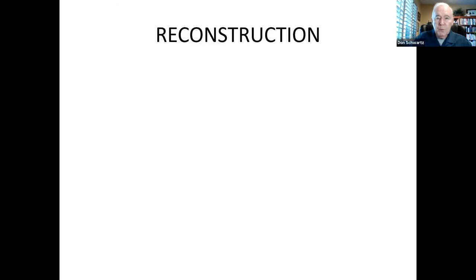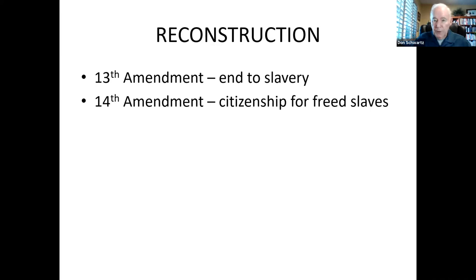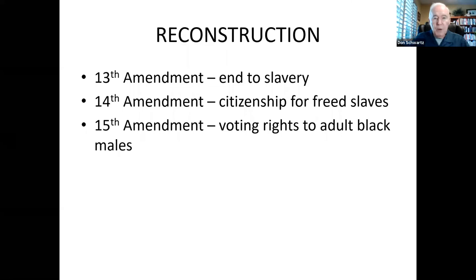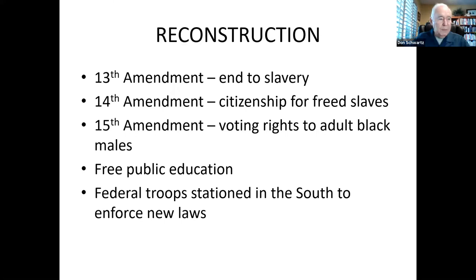During Reconstruction, federal troops were stationed throughout the South. In order for the South to be readmitted to the Union, they had to accept the 13th Amendment, which ended slavery, the 14th Amendment, which granted citizenship for the freed slaves, and the 15th Amendment, which gave voting rights to adult Black males. There were also social welfare programs that provided free public education for the newly freed African Americans, and federal troops defended the newly won rights of Blacks from attack by the Ku Klux Klan and other white supremacist terrorist groups.